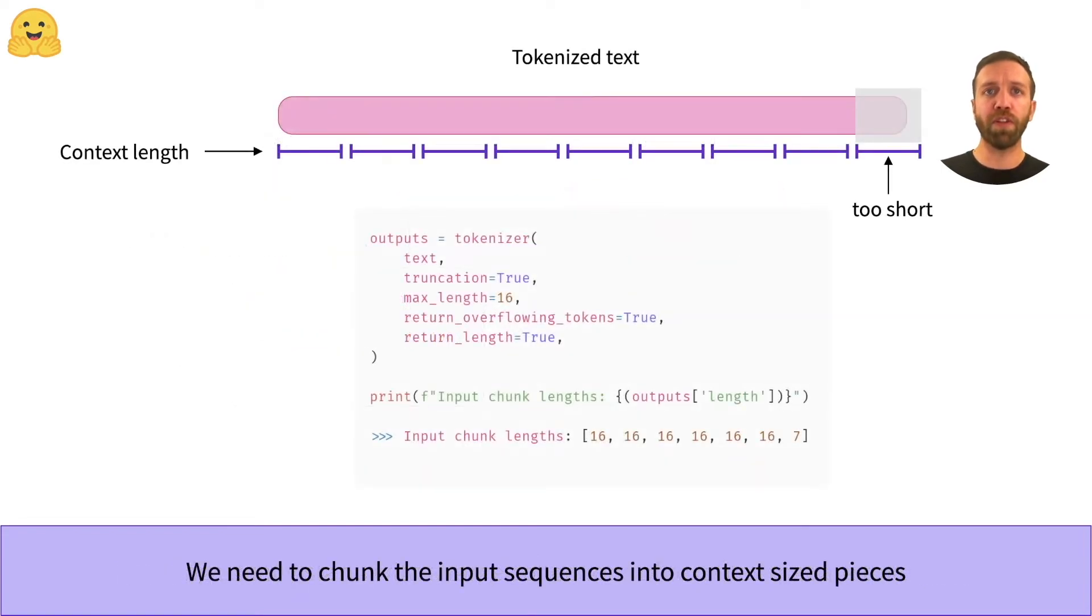However, transformer models have a limited context window, and depending on the data source, the tokenized texts can be much longer than this window. In this case, we could just truncate the sequences to the context length, but this would mean we lose everything after the first context window.